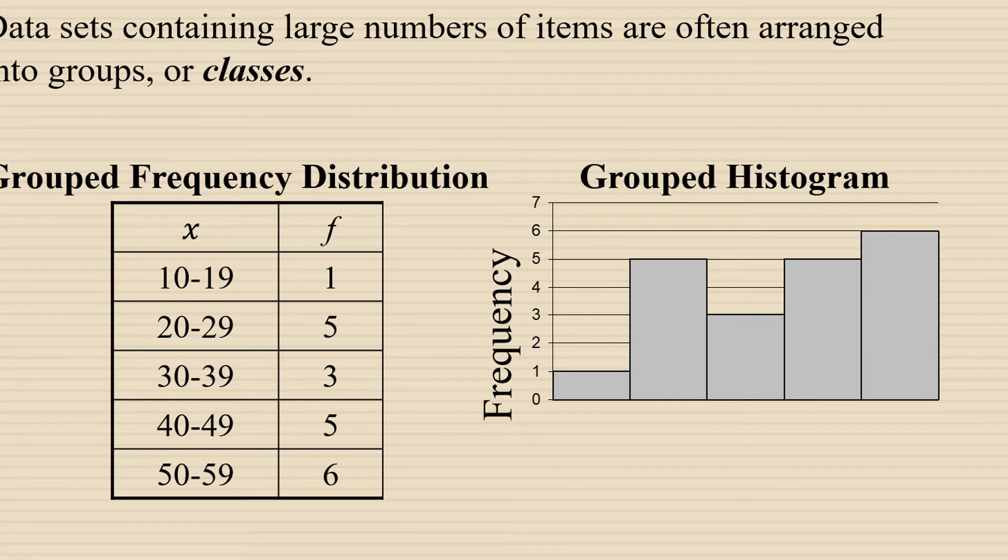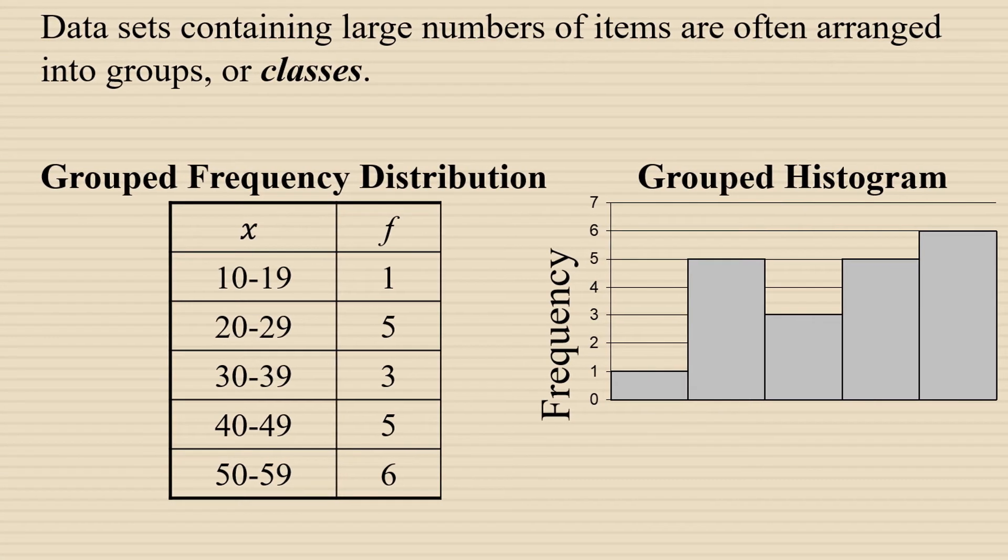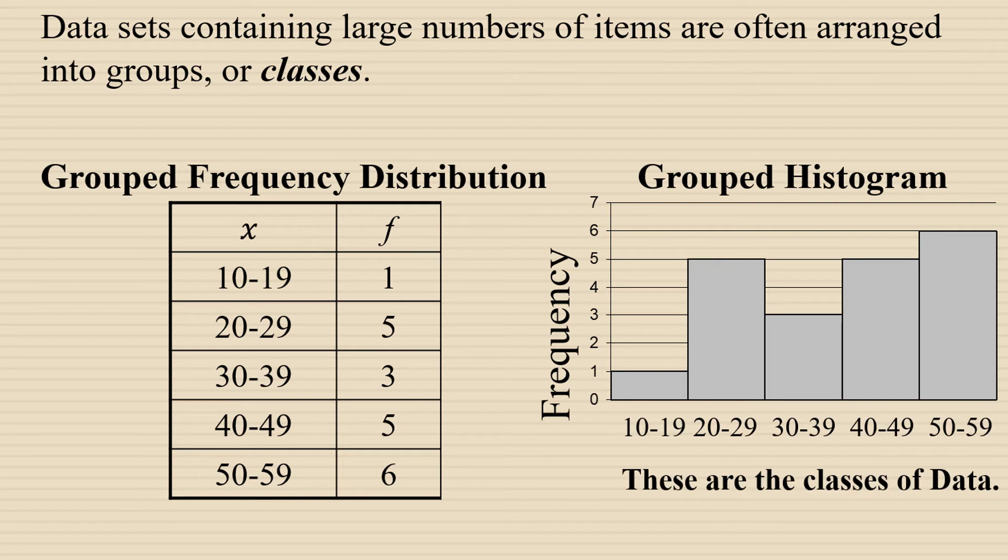We can also draw a grouped histogram, a visual representation of the grouped frequency distribution. The classes of data in a grouped histogram would run along the bottom of the rectangles that have a height that coincides with the frequency of each group of data values.